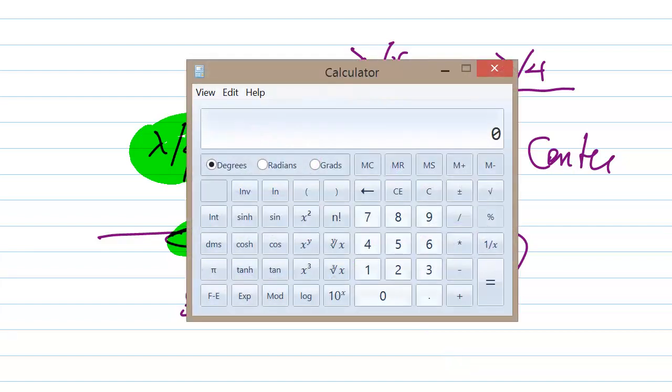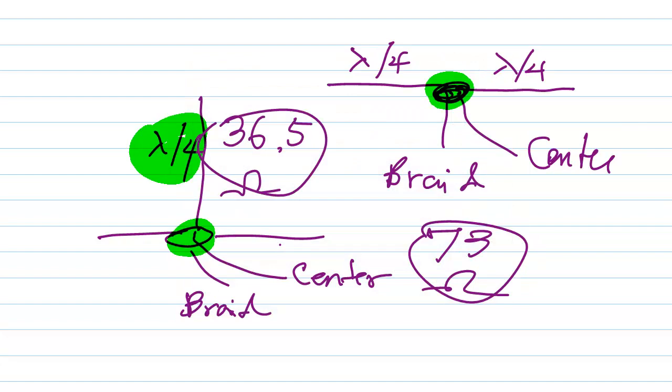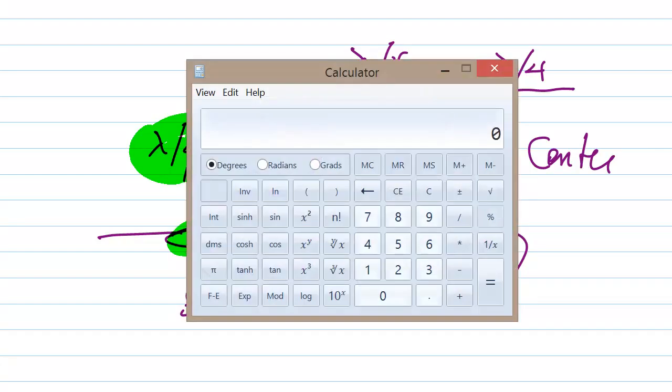Now, the geometric mean of two numbers—what you do is multiply them and then take the square root. So let's take 36.5 and multiply that by 73, and then take the square root. That would be right there: 51.6.